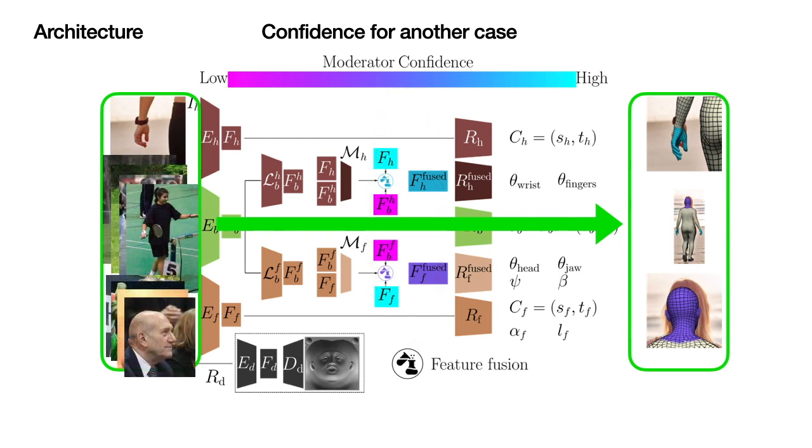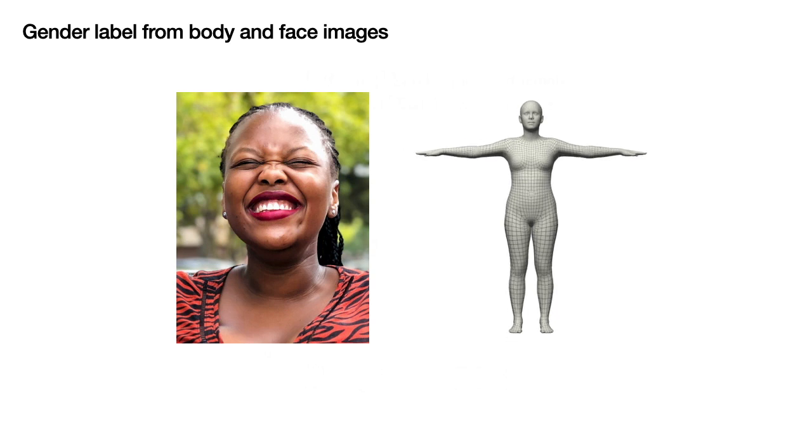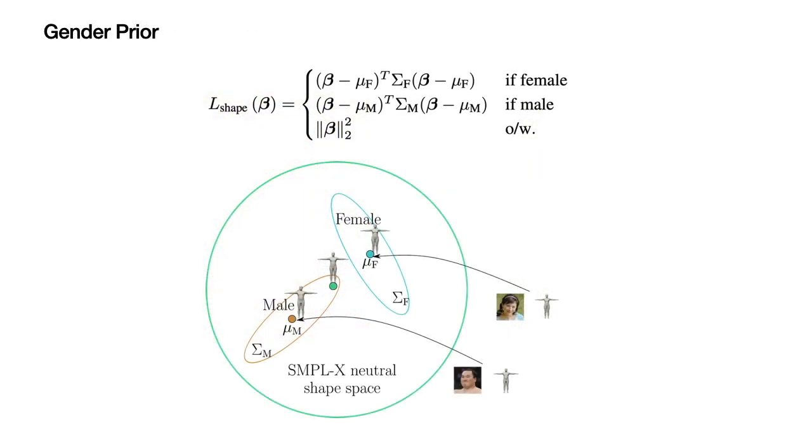using both whole body and part data. Additionally, PIXI leverages gender labels during training to bias the regressed body shape using the appropriate shape prior.